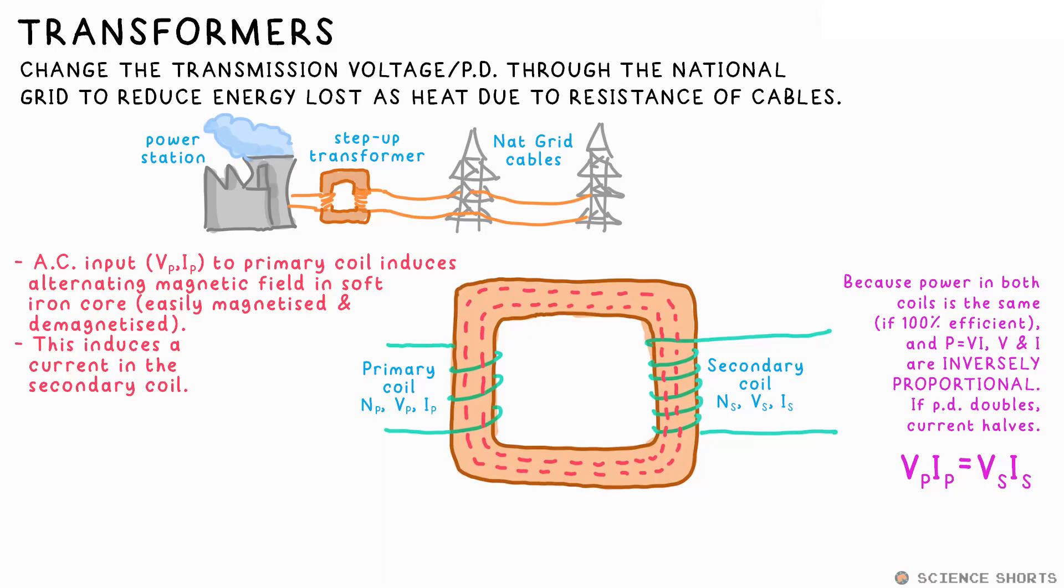In order for a current to be induced though, a wire must experience a change in a magnetic field, which is why we must use AC. If we use DC in the primary coil, it would make a magnetic field, but it would be static. It wouldn't be changing. And that can't induce a current in the secondary coil.